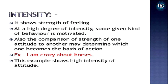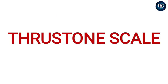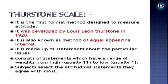The first attitude scale is the Thurstone Scale. It is a formal method designed to measure attitude, developed by Louis Leon Thurstone in 1928. It is also known as the method of equal appearing intervals. It is made up of statements about a particular issue, consisting of statements with a range of values from 1 (low) to usually 11 (high). Subjects select the attitudinal statements they agree with most.